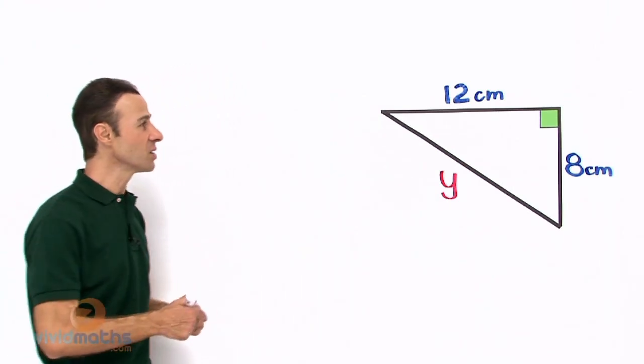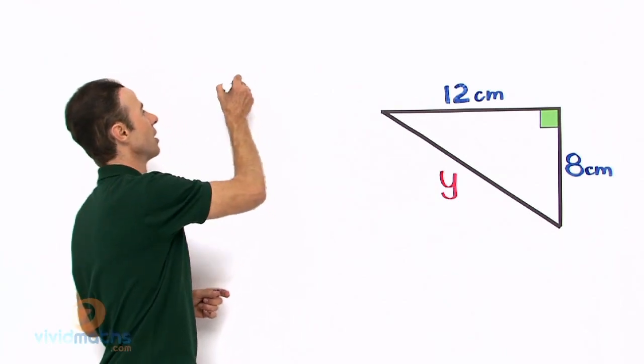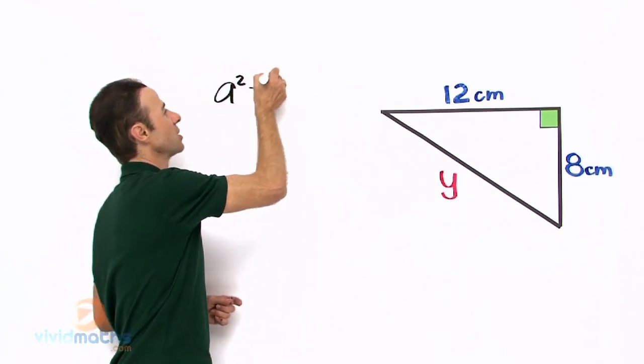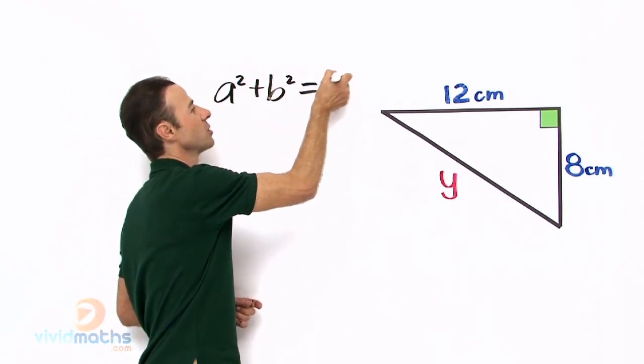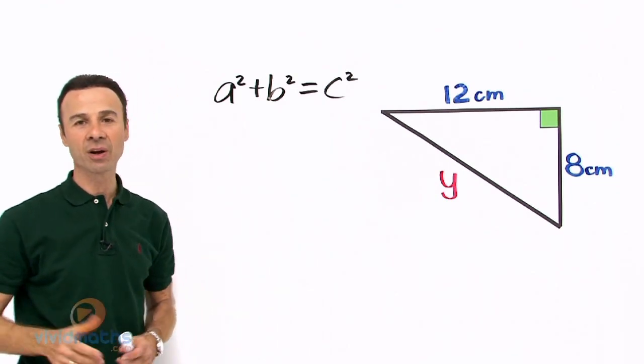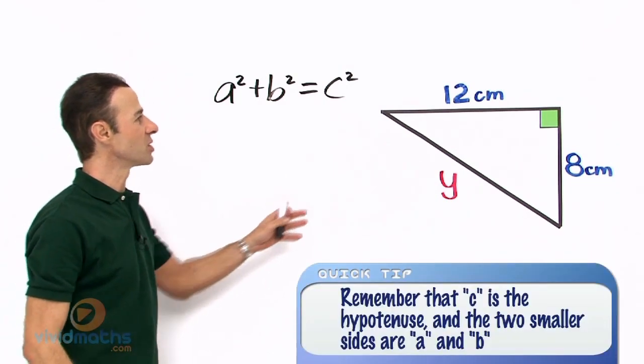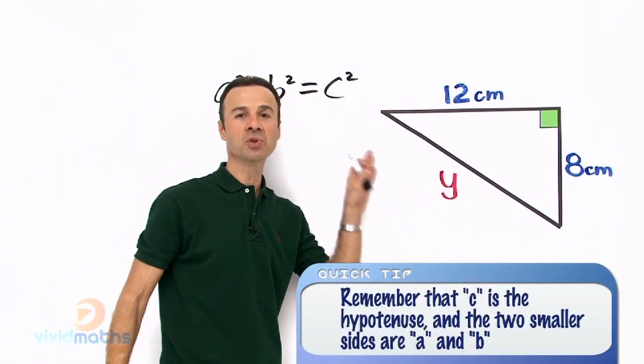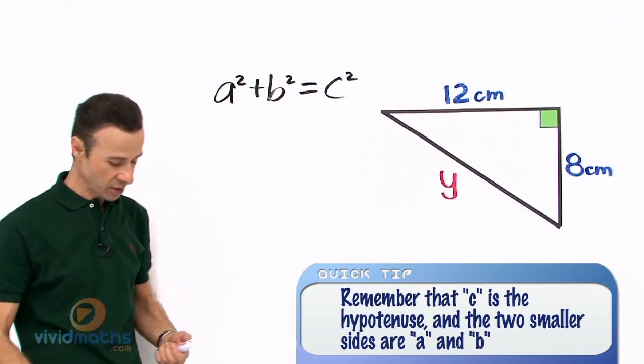Step number one is form the equation, which is a squared plus b squared equals c squared. Now that is the Pythagorean equation. Now all we have to do is take the numbers and substitute them in, including the missing pronumeral.